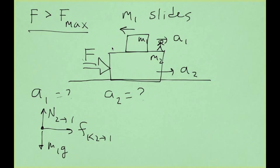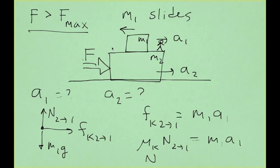Kinetic friction, therefore, is the force responsible for accelerating block 1 to the right. Kinetic friction has a constant value of μ sub k times the normal. And since in the vertical direction there is no acceleration, the normal force should be equal to the weight.